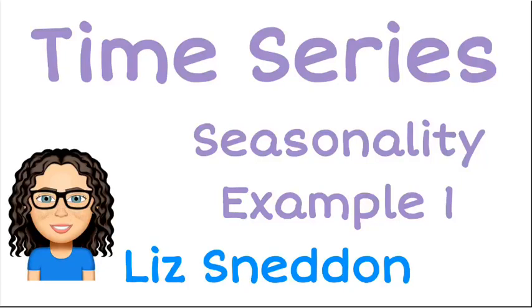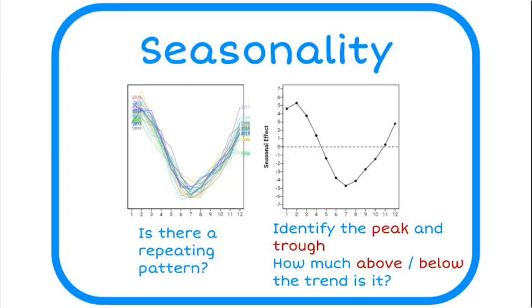Hi, I'm Liz Sneddon. We're going to look at time series and an example of seasonality. Here are our key ideas. First, we get two graphs from our data. On the graph on the left we want to identify if there is a repeating pattern. Then we look at the second graph, and if we have a repeating pattern, we want to find where the peak and trough are — the highest and lowest points — and how much above or below the trend line those points are.